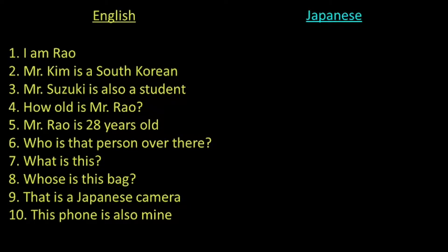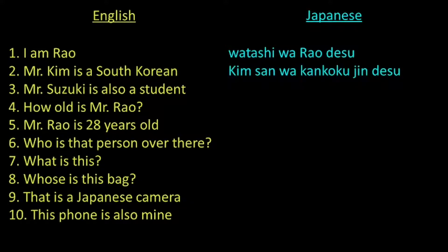Let us learn how to translate simple English sentences to Japanese. The first one is: I am Rao. Ai is Watashi. You have learned the particle Wa and you also know that the sentence has to end with desu. So the translation will be: Watashi wa Rao desu. Let us go to the next one. South Korean is Kangkokujin, so the translation will be: Kim san wa Kangkokujin desu.